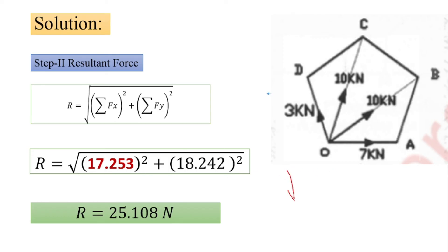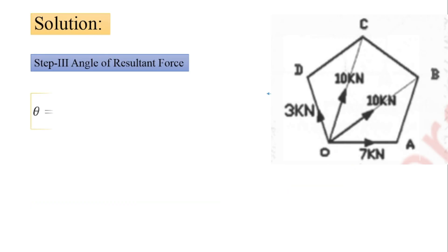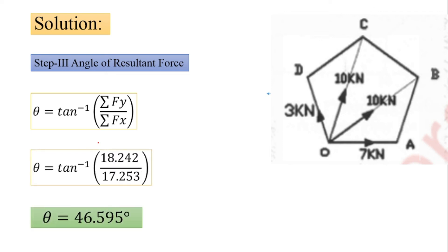Most students put the values in the calculator incorrectly — they square the first summation and add the remaining value without a bracket, so they don't get the exact answer. To get the exact answer, add one more bracket so you take the square root of the complete equation. The angle of the resultant force is theta equals tan inverse of (summation of Fy divided by summation of Fx), giving theta equals 46.595 degrees.